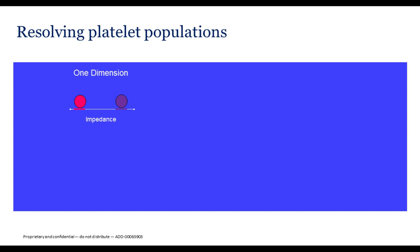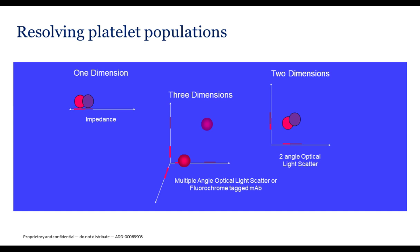To summarize resolving platelet populations: the one-dimensional approach (impedance) separates cells of similar size only, and overlap can occur. The two-dimensional approach using two-angle optical light scatter provides clearer separation, though overlap can still occur in some instances. The three-dimensional approach — multiple-angle optical light scatter or fluorochrome-tagged monoclonal antibody — provides the most definitive separation; even when interferences or similarities exist, the fluorochrome-tagged monoclonal antibody will ultimately separate the platelet population.